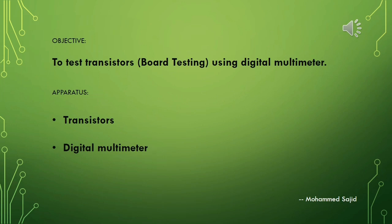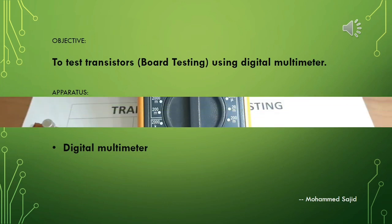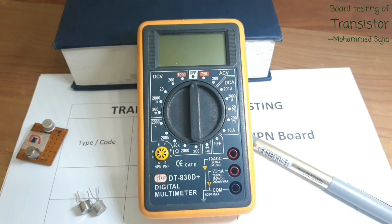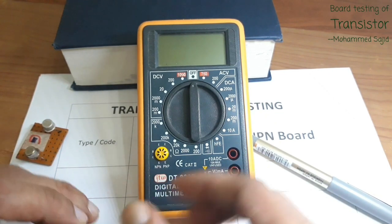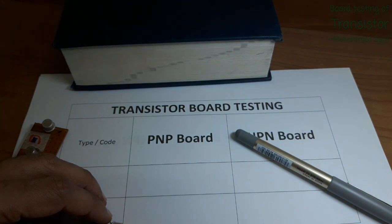The objective of today's experiment is to test a transistor using a digital multimeter, but this is board testing. Board testing means we will use a feature of the digital multimeter to test the transistor. The transistor testing boards are given on the digital multimeter. In today's video we will learn how to test a transistor on the board using a digital multimeter — this method is called board testing.